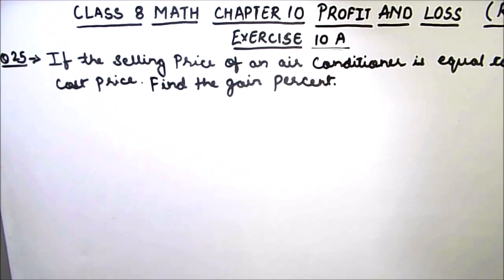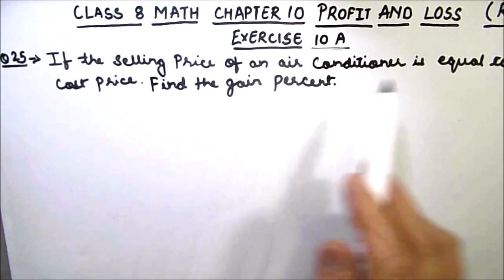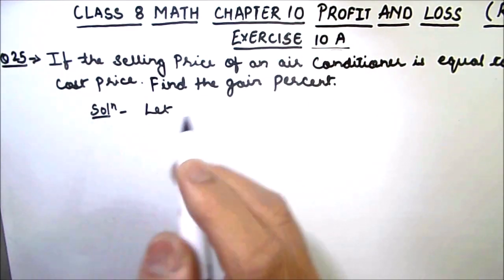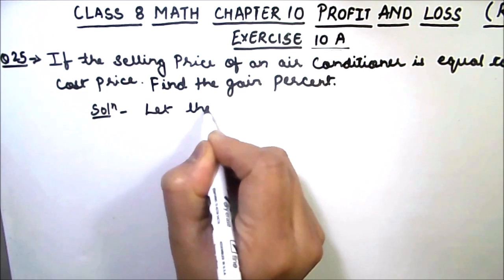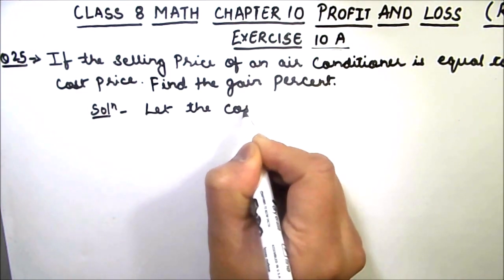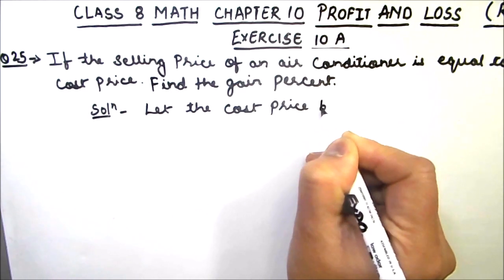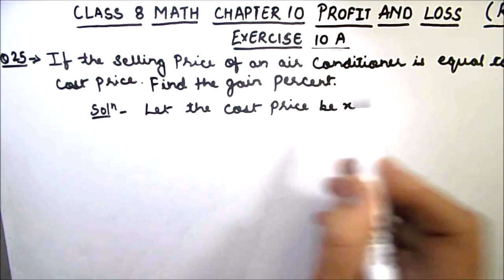In this question, we have been given the selling price as the ratio of its cost price, and we need to find the gain percent. In this type of question, first of all, as selling price is given as the ratio of its cost price, let us suppose that the cost price be x.